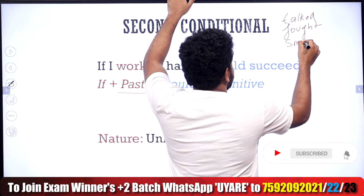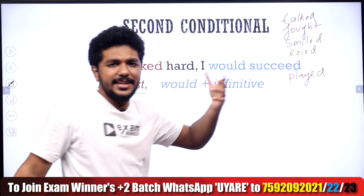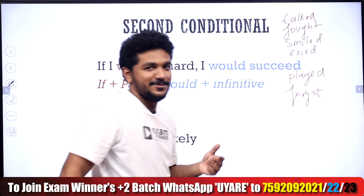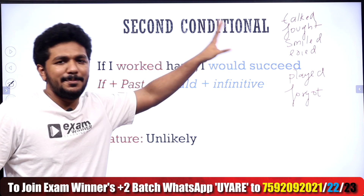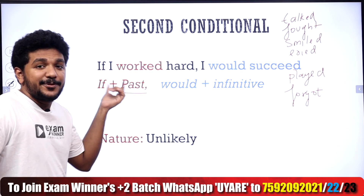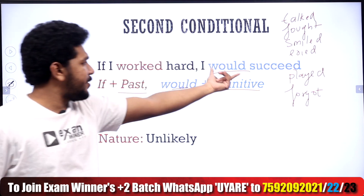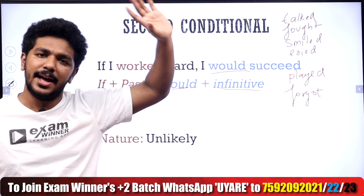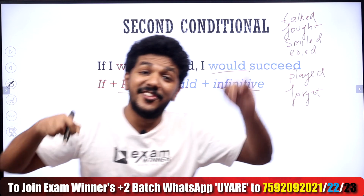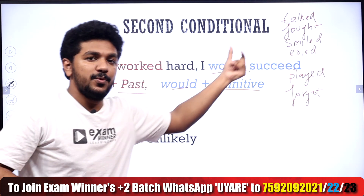Smile becomes smiled. Cry becomes cried. Play becomes played. Forget becomes forgot. If you have a past tense verb in the if clause, the main clause uses 'would'. Would is followed by the infinitive — the base verb. So: If I worked hard, I would succeed. That is the Second Conditional — simple past in the if clause, would plus infinitive in the main clause.